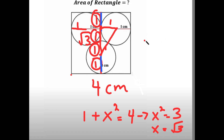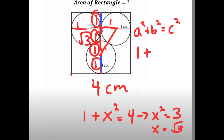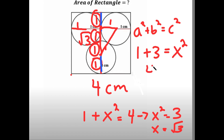Now knowing this, we can find the length of the hypotenuse using the formula a squared plus b squared equals c squared. In this case, one squared is one, plus the square root of three squared is three, so one plus three equals four, meaning the hypotenuse squared equals four, so the hypotenuse equals two.